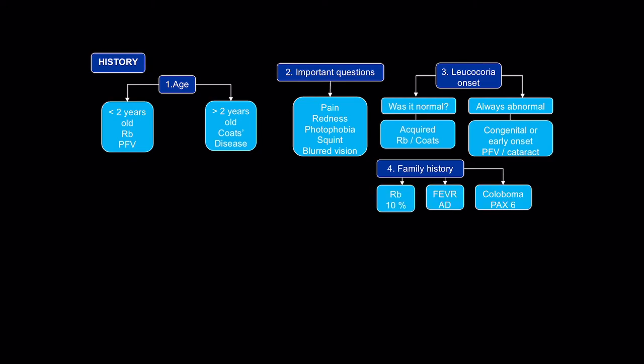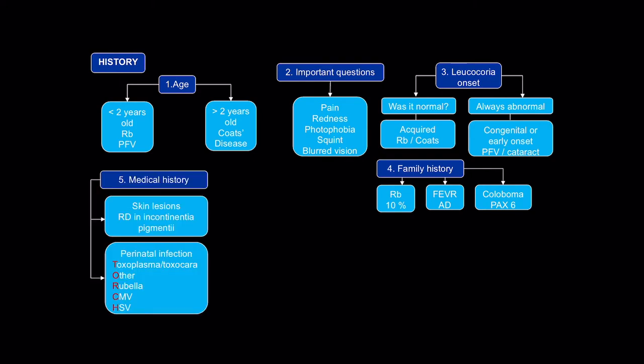Ask about family history. Family history is positive in about 10% of retinoblastoma. Remember, FEVR is autosomal dominantly inherited, and colobomas are associated with the PAX6 gene defect. Check medical history for skin lesions — retinitis with retinal detachments can occur in incontinentia pigmenti.